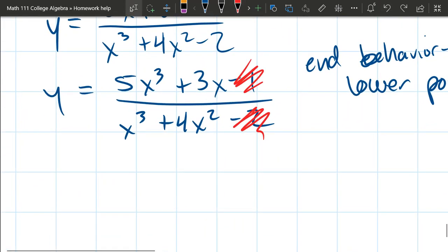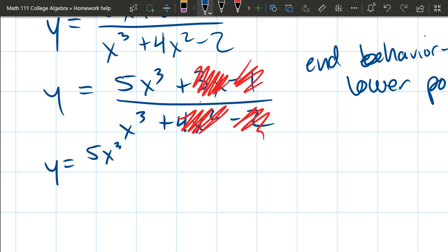All right, because they match, you do not need to keep the second highest power on the top. Second highest power on the bottom is gone. And what we're left with, 5x cubed over x cubed. And now x cubed cancel, y equals 5. That is our horizontal asymptote.